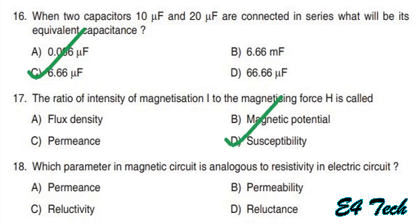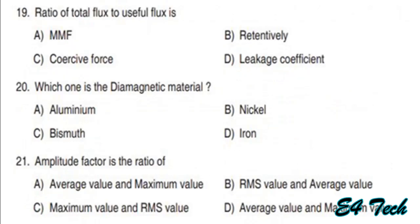Next: which parameter in magnetic circuit is analogous to resistivity in electric circuit? Reluctance is analogous to resistance, and reluctivity is analogous to resistivity. Option C. Next: the ratio of total flux to useful flux is equal to the leakage coefficient. Option D. Which one is the diamagnetic metal? Among aluminium, nickel, and bismuth — bismuth is diamagnetic. Option C.